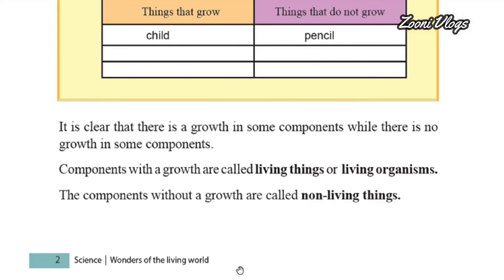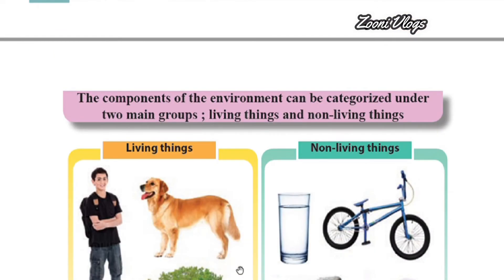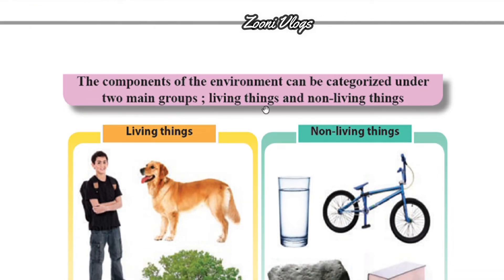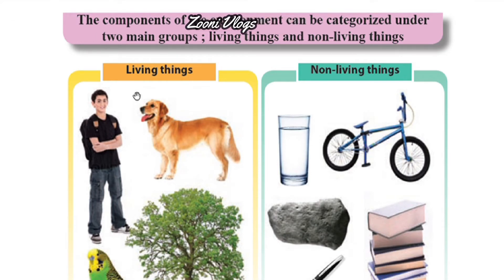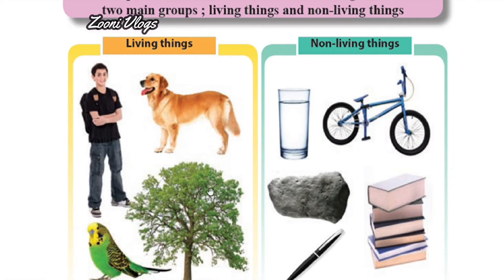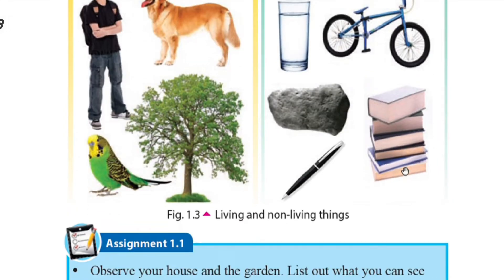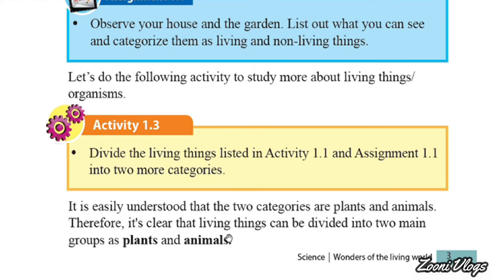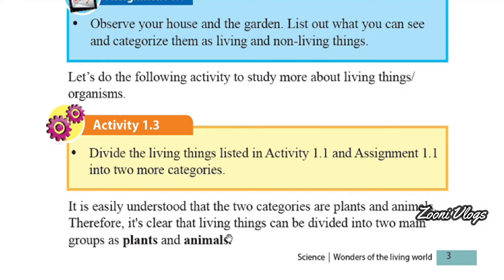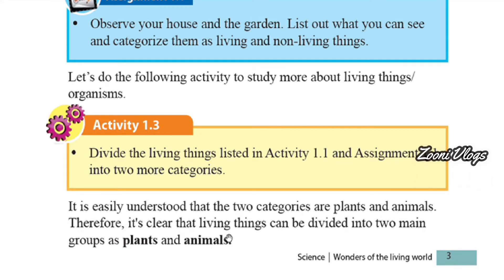We have now identified what are the living things and what are the non-living things. The components of the environment can be categorized under two main groups: living things and non-living things. Under living things we can see a boy, a dog, a bird, and a tree. Under non-living things there is a glass of water, bicycle, rock, pen, and books — these are man-made, artificial things. It is easily understood that living things can be divided into two main groups: plants and animals.